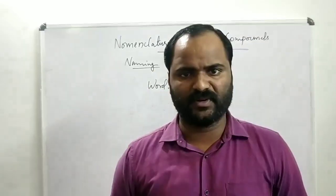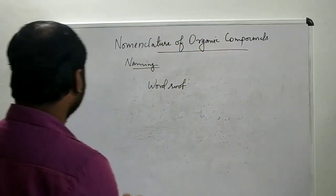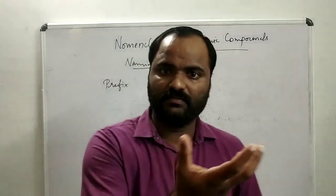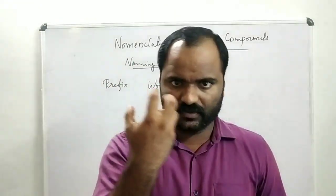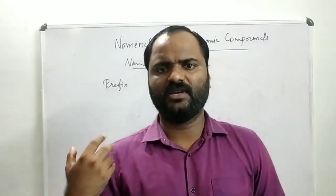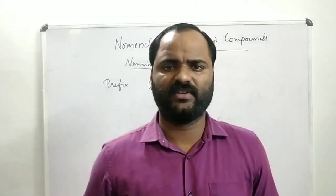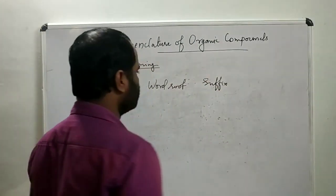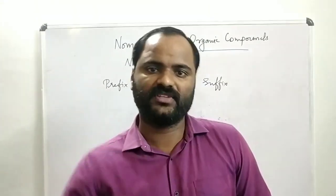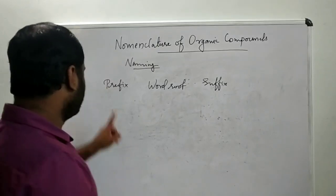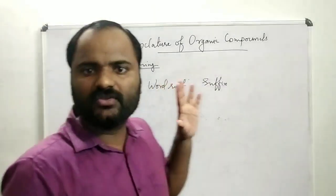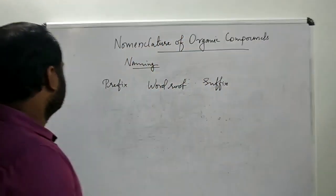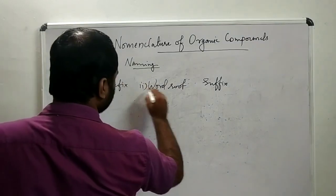Word root is all about the number of carbon atoms. We also need a prefix — the word we use before the word root is called a prefix, something we fix before a word. The third thing we use is a suffix — after the word root we have suffixes. So an IUPAC name consists of all three things: prefix, word root, and suffix.